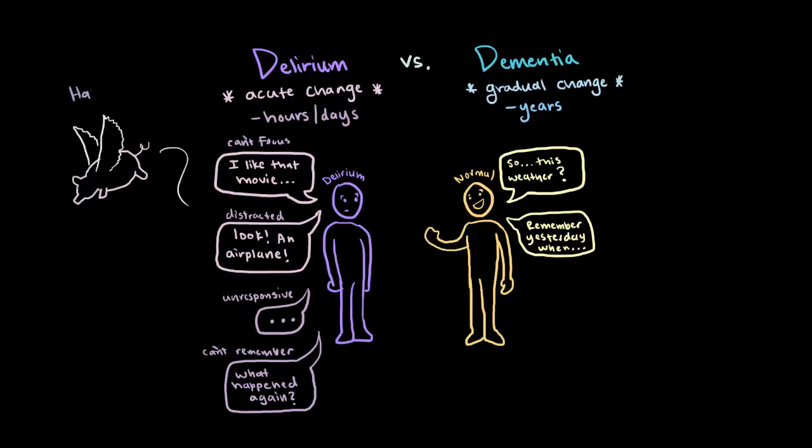And finally, in some cases, they might have hallucinations or extreme emotions like fear, anxiety, anger, and depression.